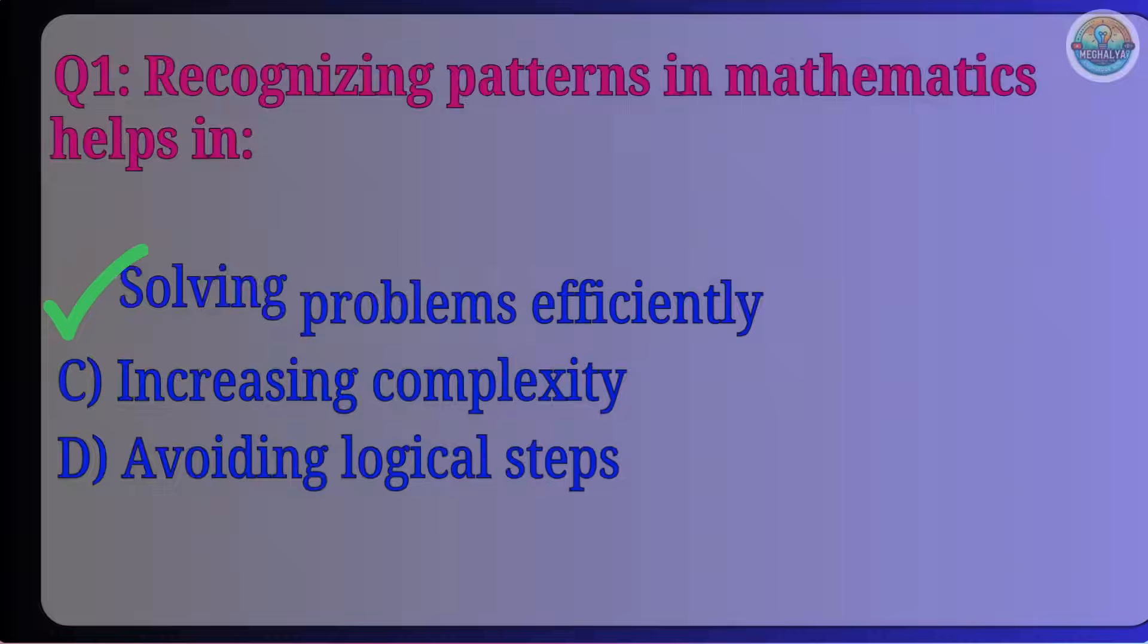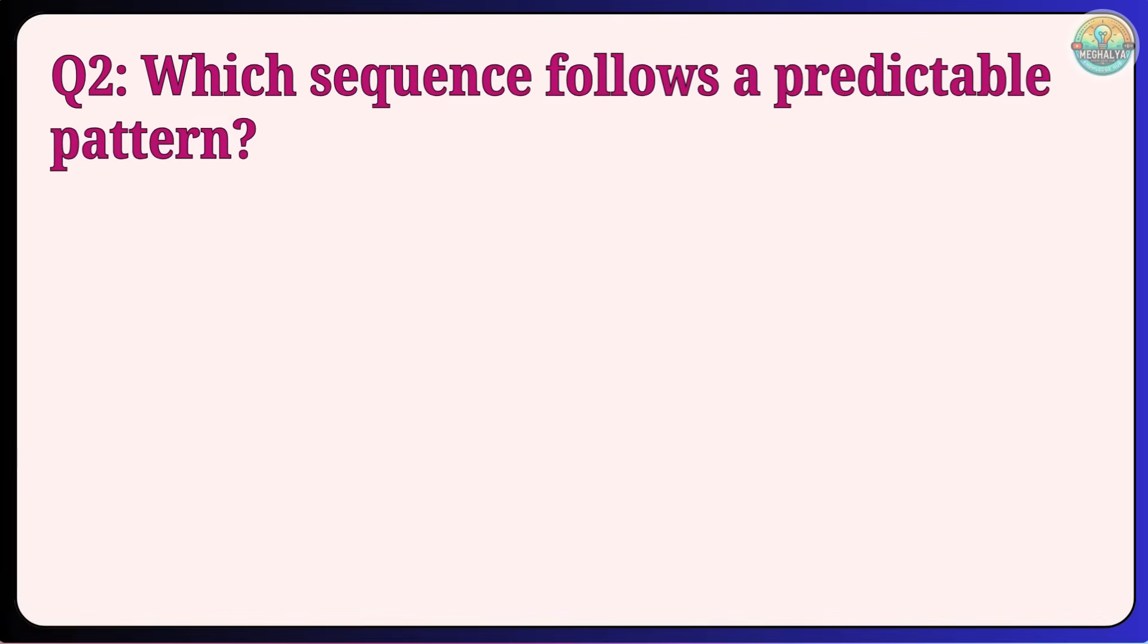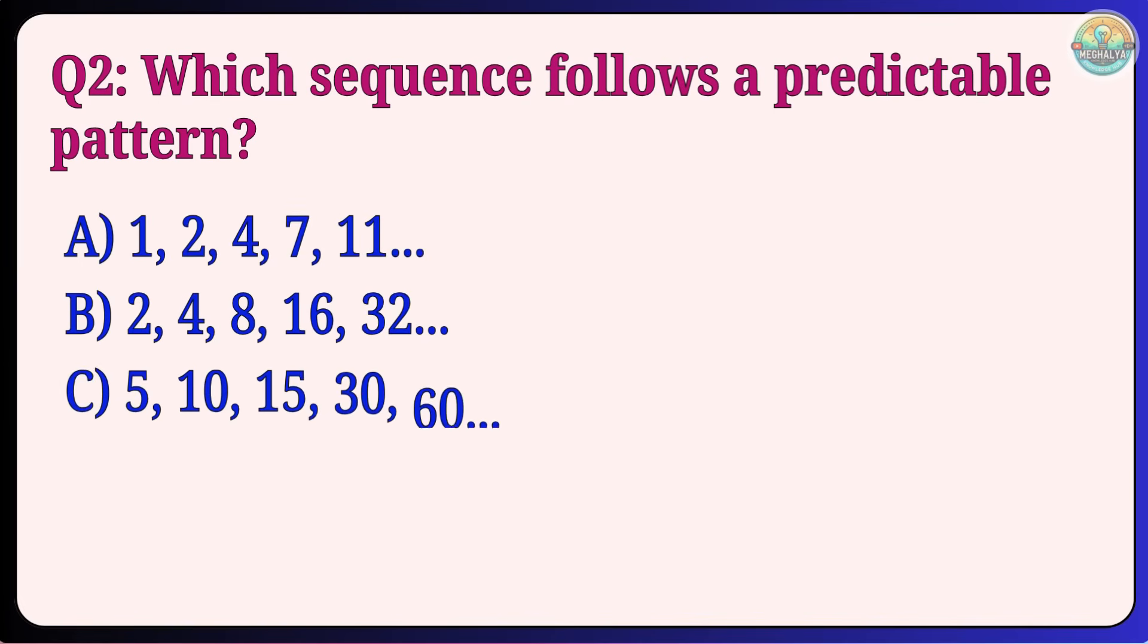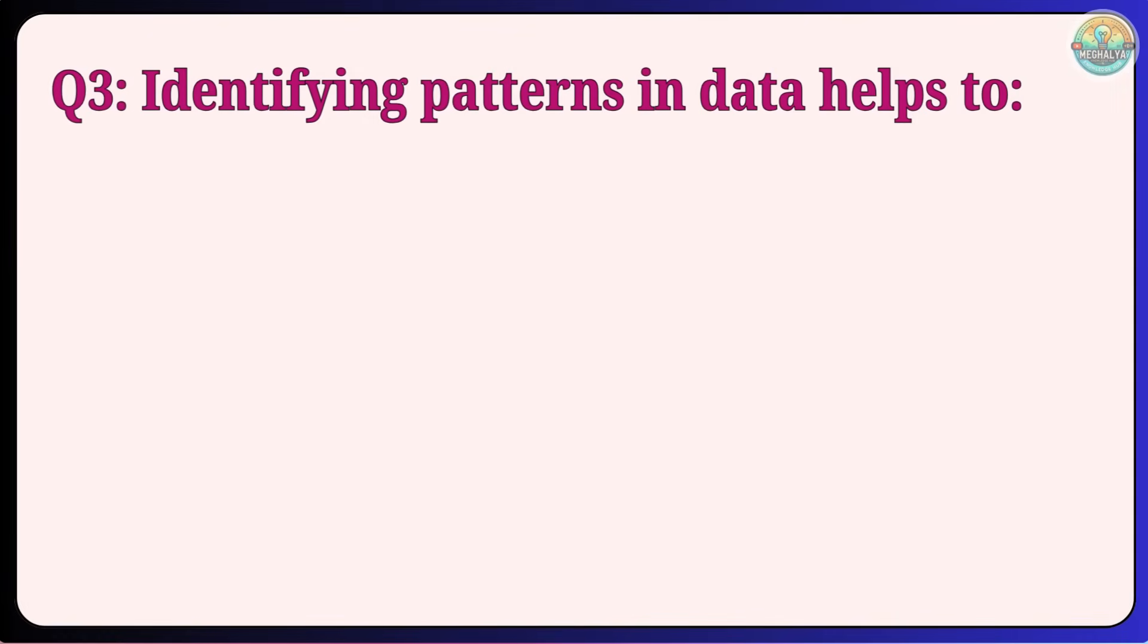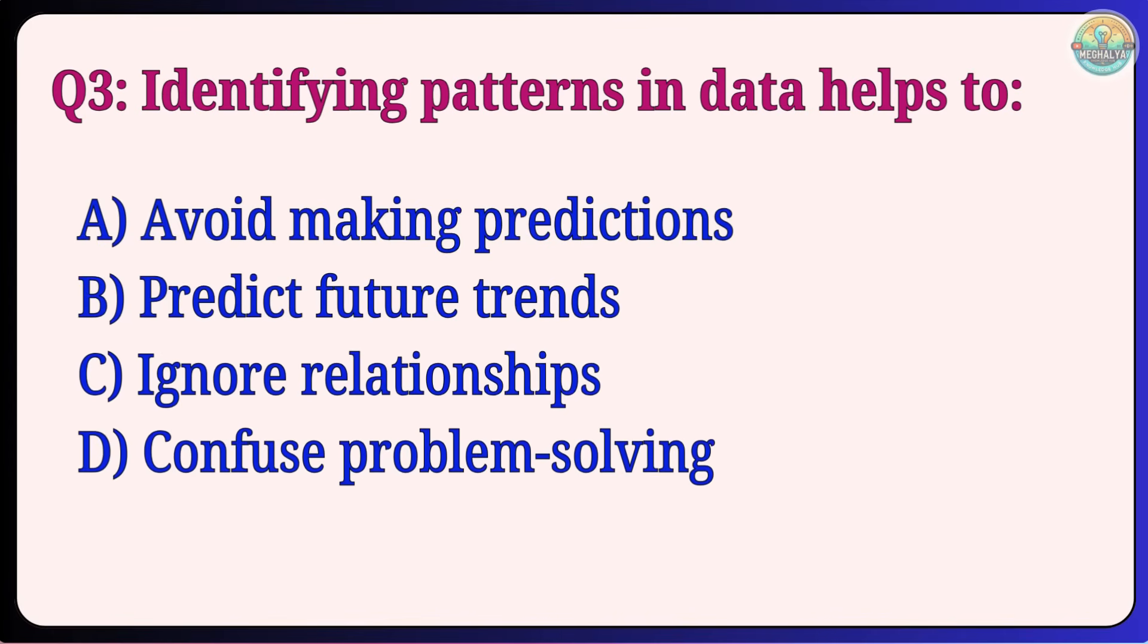Question 2: Which sequence follows a predictable pattern? A. 1, 2, 4, 7, 11 B. 2, 4, 8, 16, 32 C. 5, 10, 15, 30, 60 D. 3, 6, 9, 20, 25. Answer: B, 2, 4, 8, 16, 32.